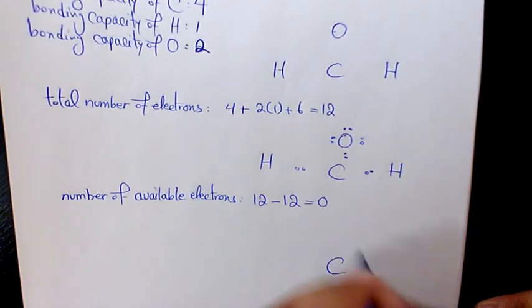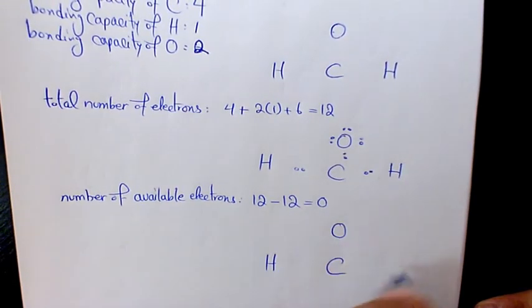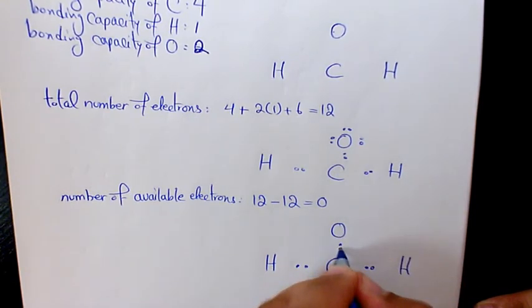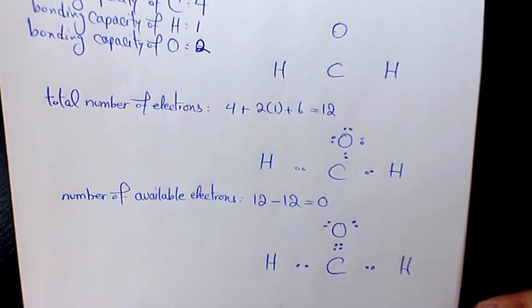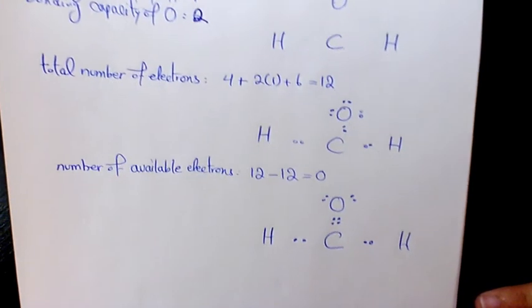So it's going to be C, O, H, H. This remains the same here. Instead of 2 electrons, it's going to be 4 electrons. And we have 2 lone pairs here.